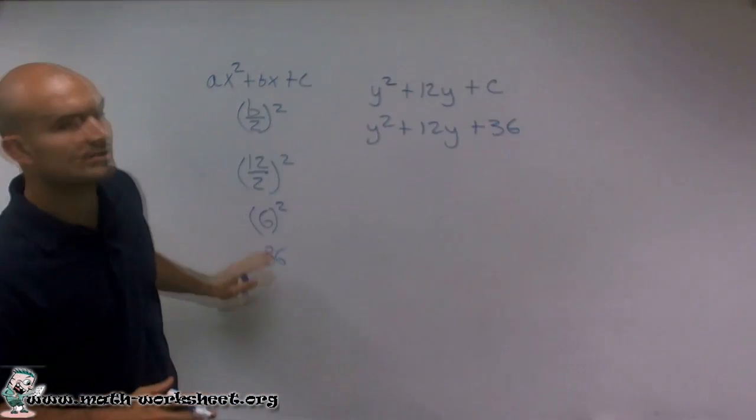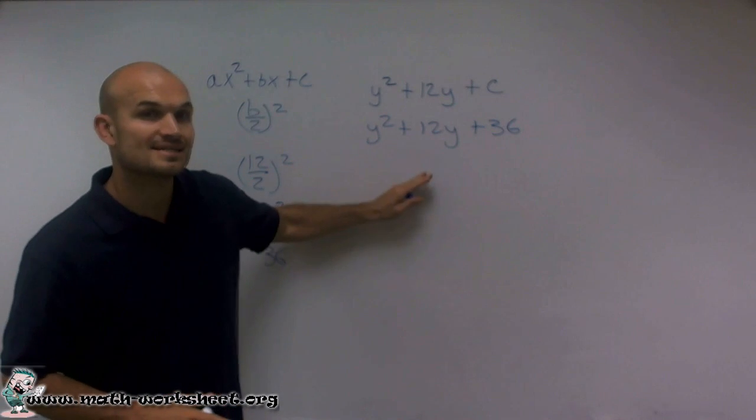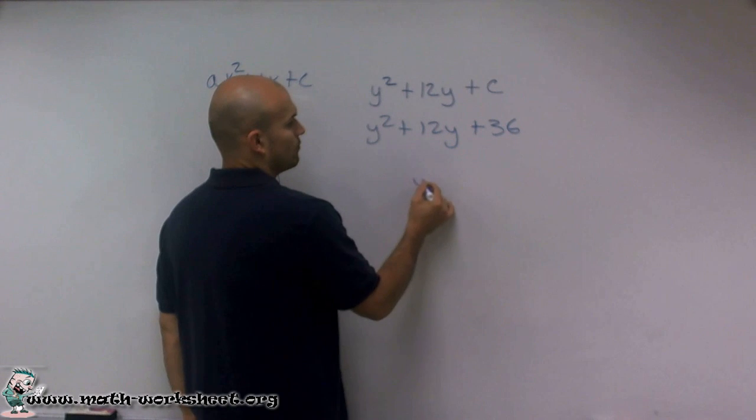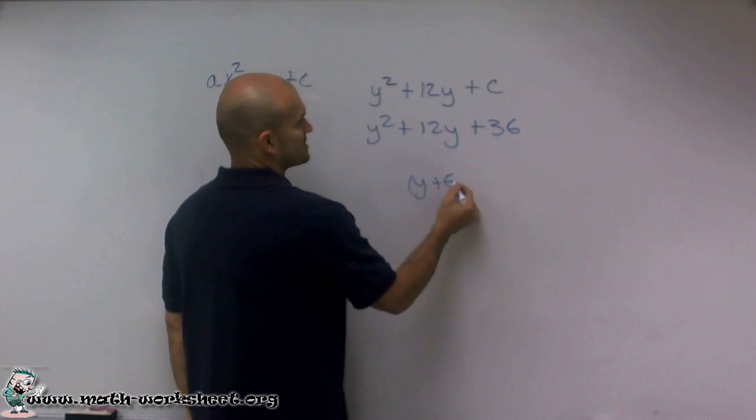And I'll just help you out. The reason why we want it to equal 36, the reason why we do this process, is because the next step in completing the square would be to write this as a perfect square binomial, which would be y plus 6 squared.